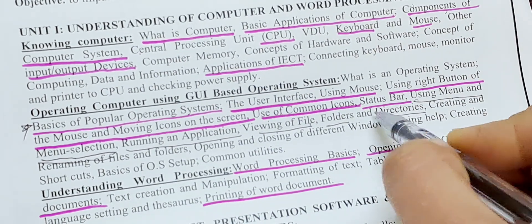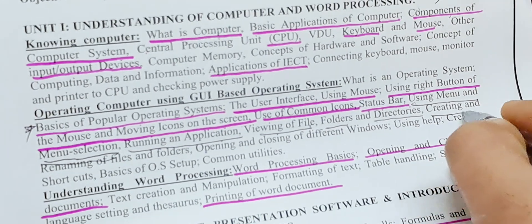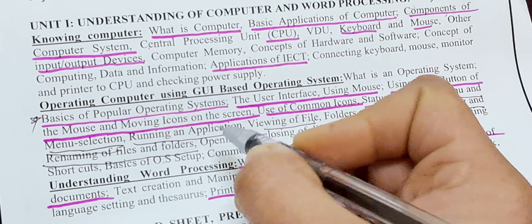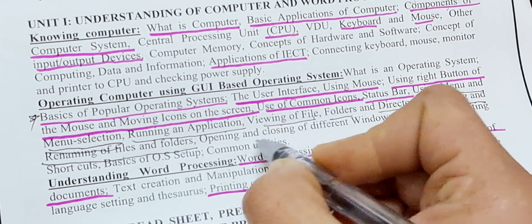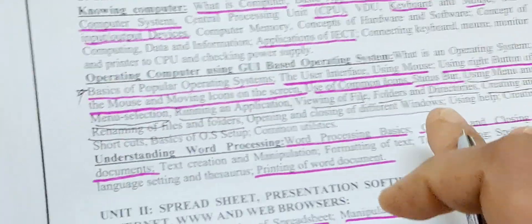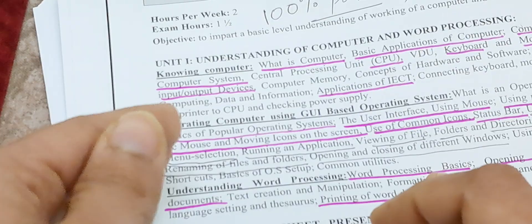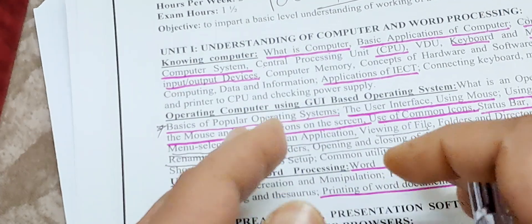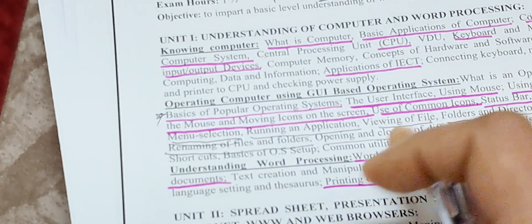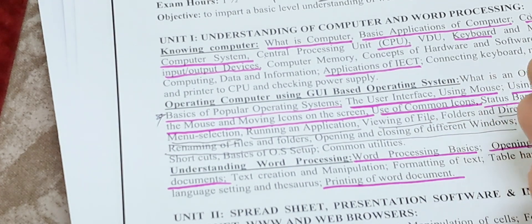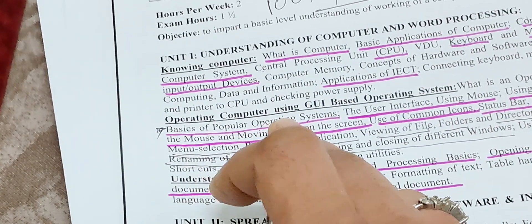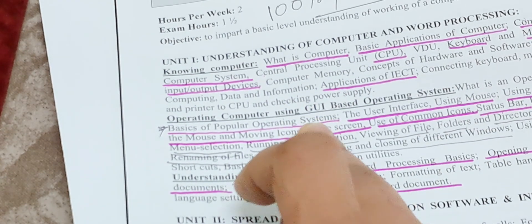Under operating system topics, also cover: running an application, viewing of files and folders — if you practice this on a computer it will be very easy to understand each point. Creating and renaming of files and folders, opening and closing of different windows — learning these will be beneficial for good marks. Try to write only a three-page answer; don't elaborate more than three pages.